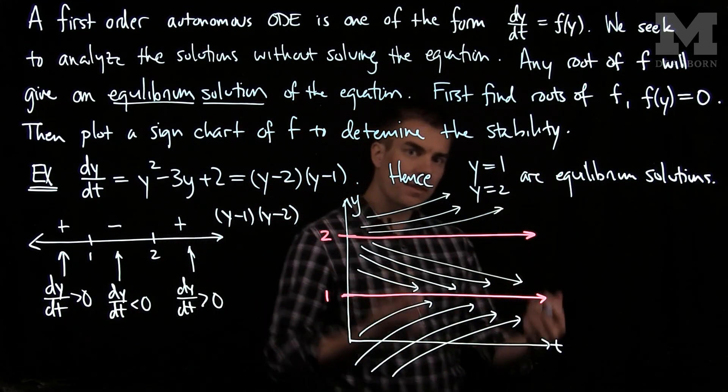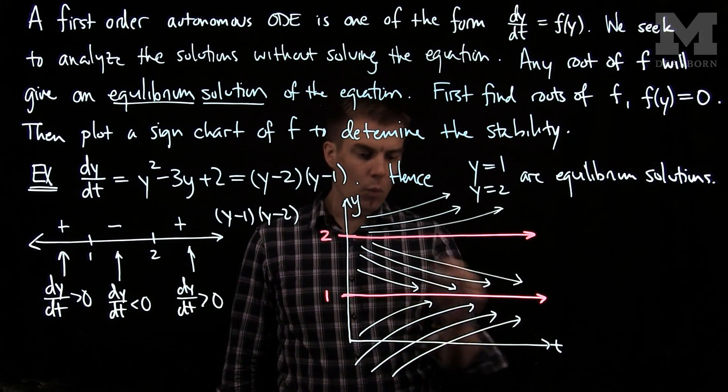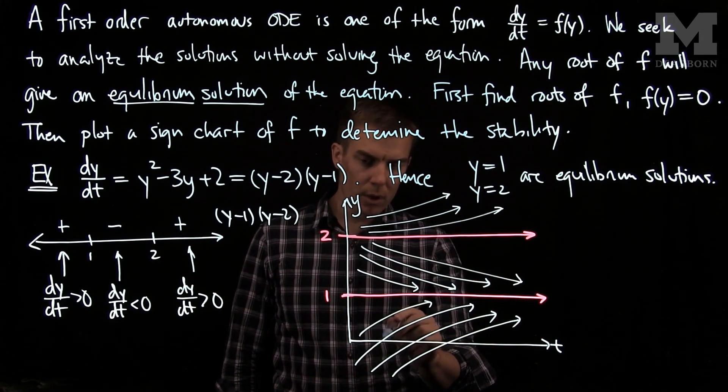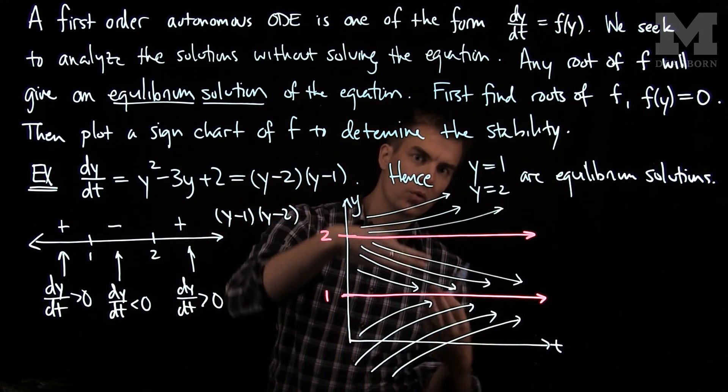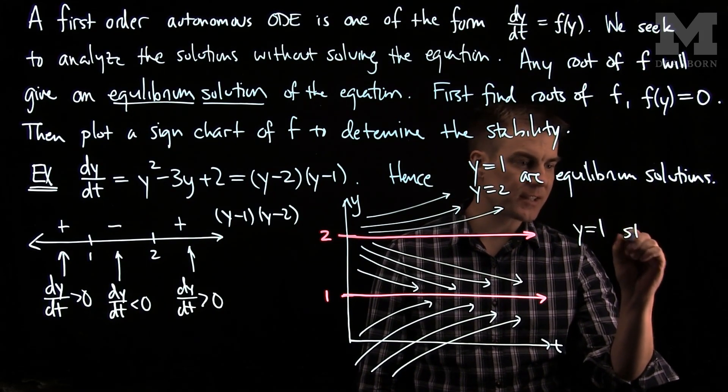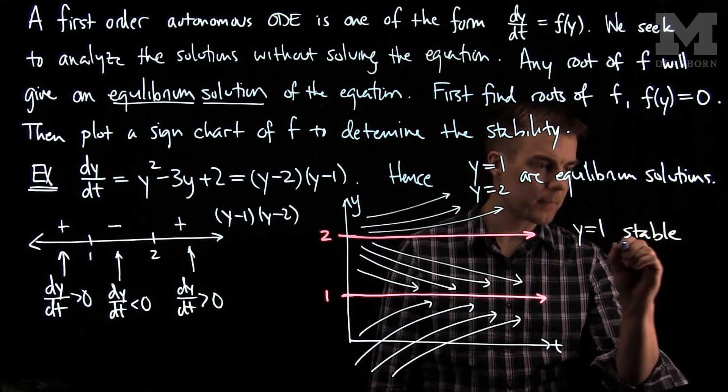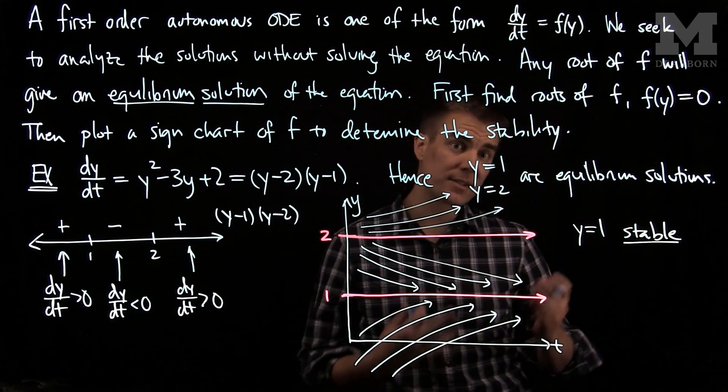Looking at this configuration, we see that any solution that starts below 1 or between 1 and 2 will tend to the solution y = 1. So we will say that y = 1 is a stable equilibrium, as solutions tend to approach y = 1 as time gets very large.